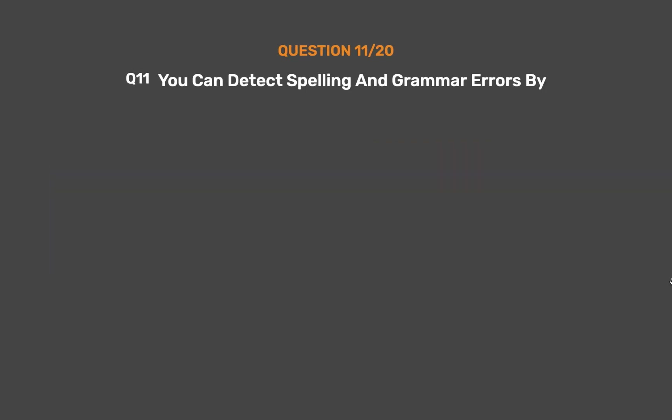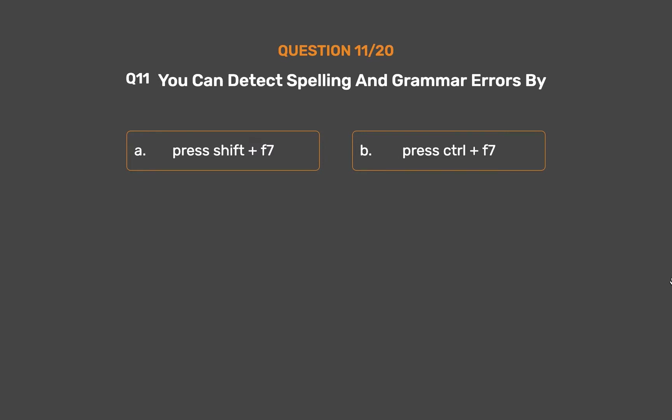Question number 11. You can detect spelling and grammar errors by: Option A: Press Shift+F7. Option B: Press Ctrl+F7. Option C: Press Alt+F7. Option D: Press F7.